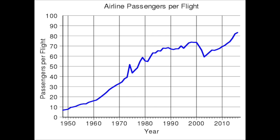I wanted to start with this interesting and funny graph — this is for American Airlines, one of the busiest airlines in the world. Back in the 1950s the number of people per flight was about ten. That went up for the most part through the 1980s, with things really picking up around 1975. Then things slowed in the 1980s and 90s, and have really picked up since about 2004, so passengers per flight has been about 80 or even 100.